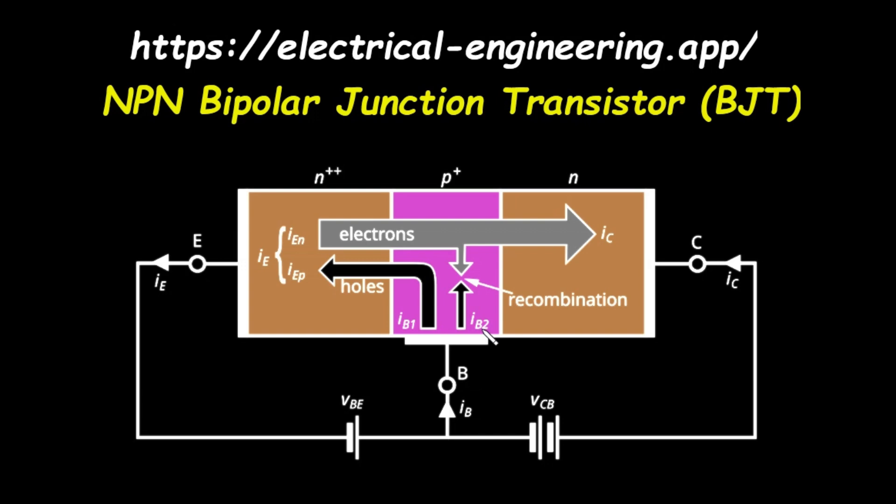Let's put it all together. A large emitter current, I_E, flows into the device. This current is composed almost entirely of electrons. The vast majority of these electrons travel across the base and are collected, forming the large collector current, I_C. A very small fraction of the total current is diverted to the base terminal as I_B. This base current accounts for the small number of holes injected into the emitter and the small number of electrons that recombine in the base. According to Kirchhoff's current law, the total current entering the transistor must equal the total current leaving it. This gives us the fundamental equation for a BJT, the emitter current, I_E, is equal to the base current, I_B, plus the collector current, I_C.